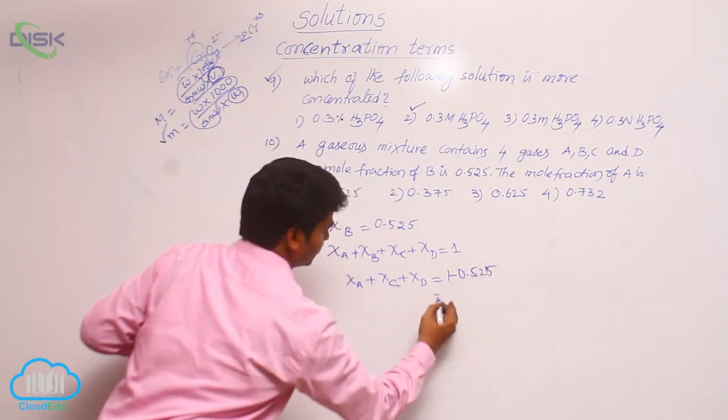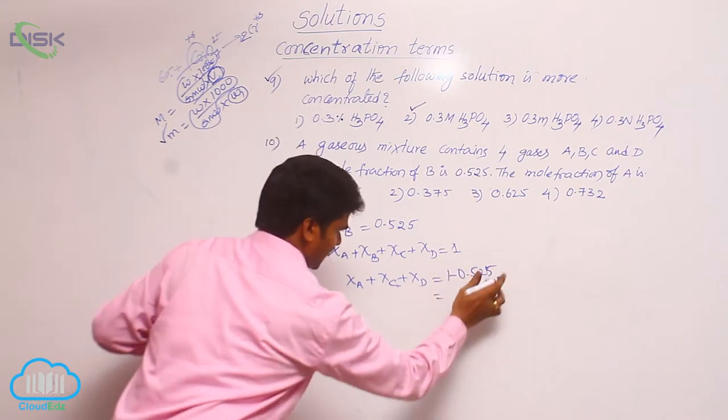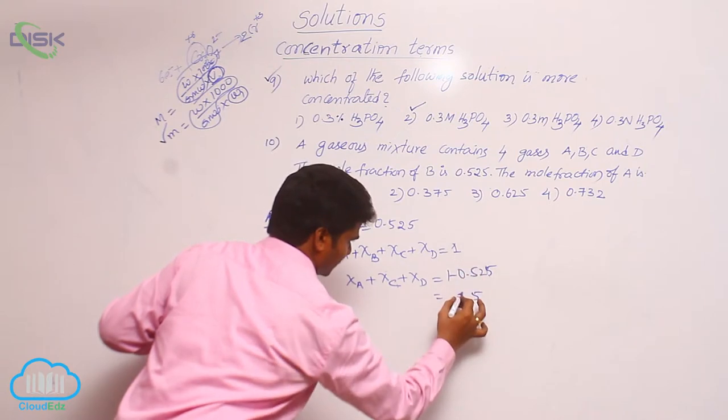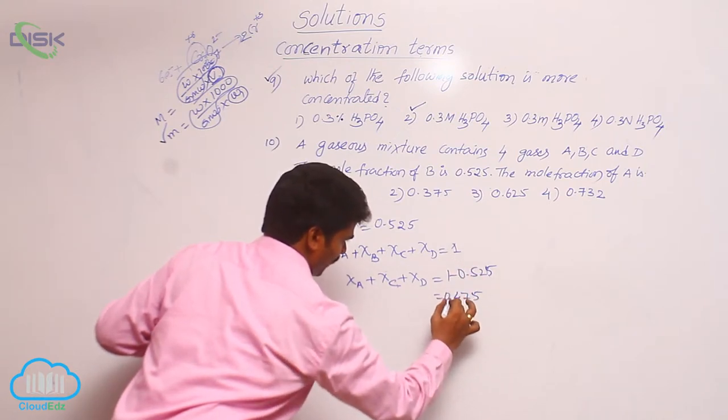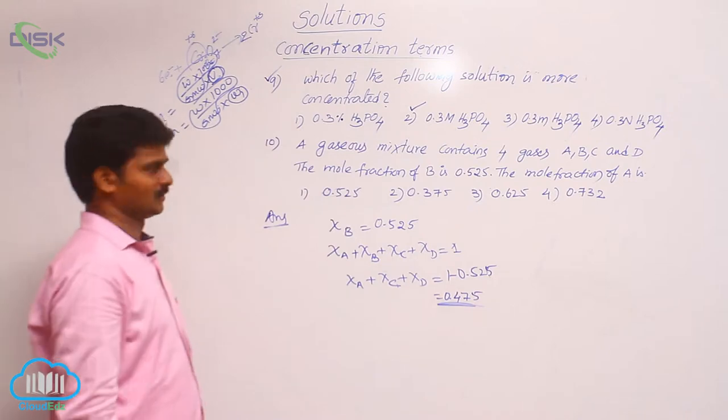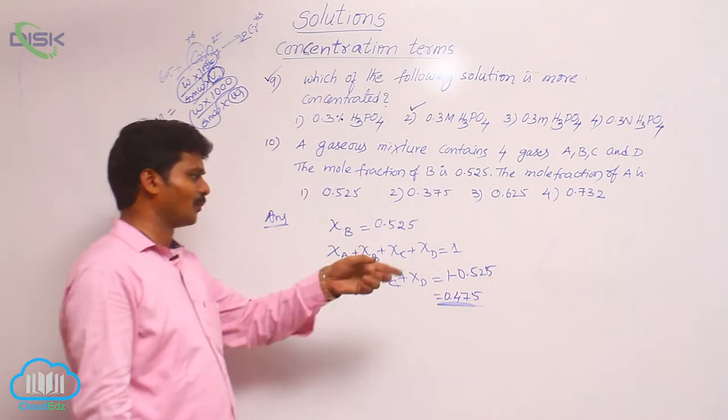Its value is 10 minus 5, 9 minus 2, 0.475. So sum of these 3 is 0.475.